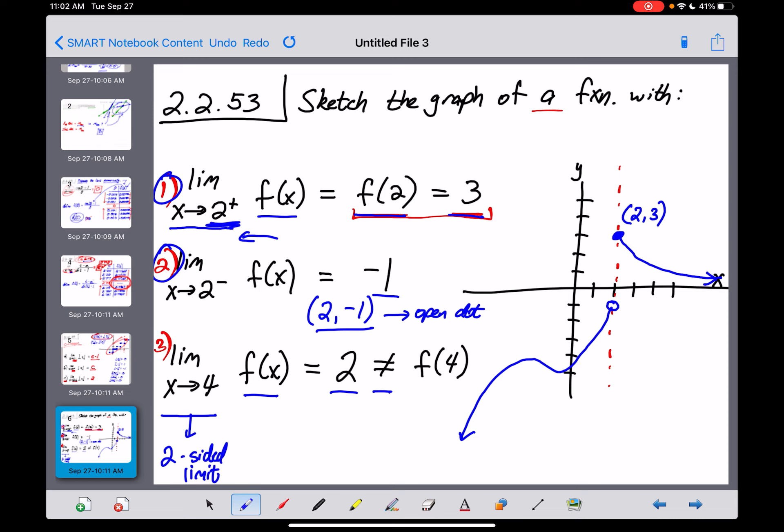However, that cannot equal the value of f of 4 itself. So what that tells me is the limit as x approaches 4 equaling 2 tells me that we need to get to the ordered pair (4, 2).